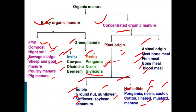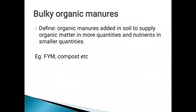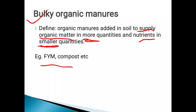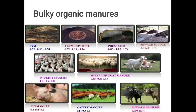This is the classification of organic manures. Now let us define bulky organic manures: organic manures added in the soil to supply organic matter in more quantities and nutrients in smaller quantities. This is called bulky organic manures. Examples include FYM, compost, and vermicompost.